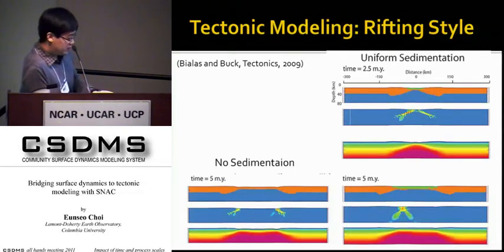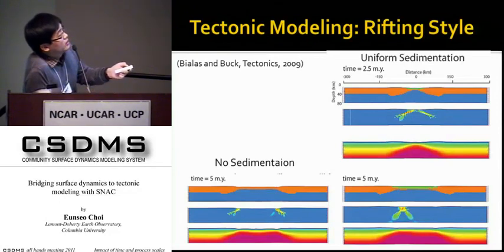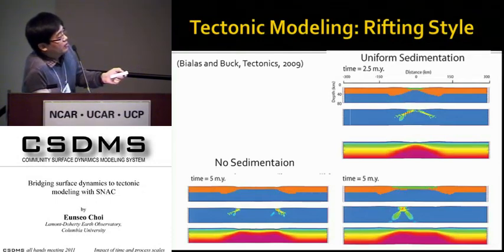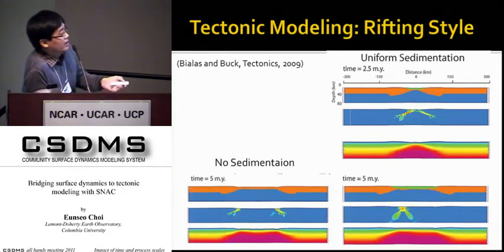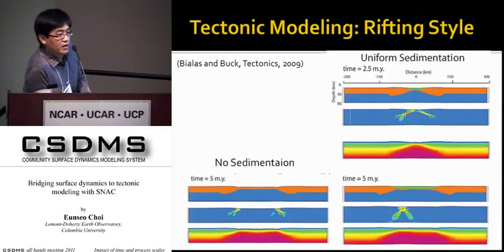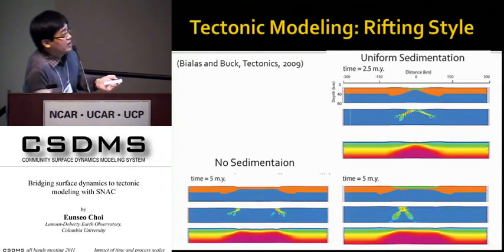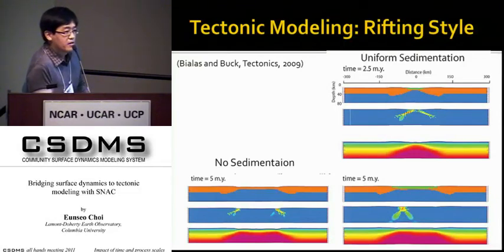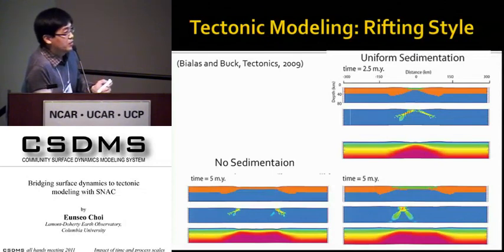However, you get a completely different response when you start adding sediment. On top of the extending region, a green sediment layer accumulates. After again about 100 kilometers of extension, the strain rate field now shows only one side of active deformation, and the temperature field has clearly asymmetric thickness variation — the whole system is now going through focused rifting. The reason is that the thick blanket of sediments increases the boundary layer thickness, and the system takes advantage of non-uniform strength: only the weakest part survives and takes up all the extension.